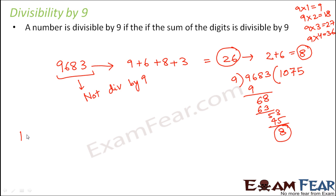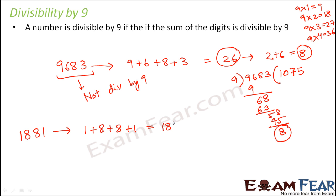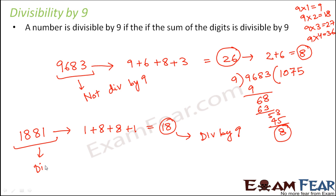Let us look at another example: 1881. Do you think this will be divisible by 9? Let's quickly look at the sum of the digits — the sum is 18, and 18 is divisible by 9. So this proves that 1881 is also divisible by 9. You can confirm this by actual division, which will show a remainder of 0.